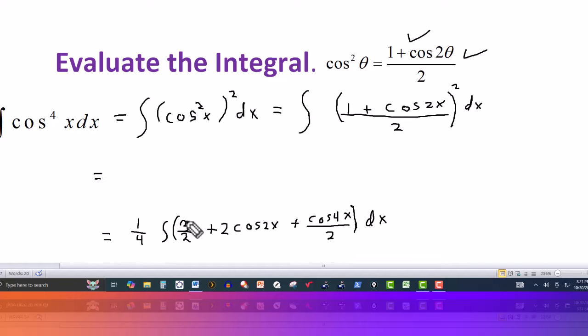So now we just integrate. Integrating three halves with respect to x is three halves x. But then you have times one fourth. So that's three eighths x. And now this one, we have a two here. That's constant.